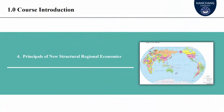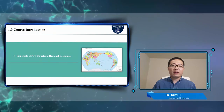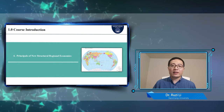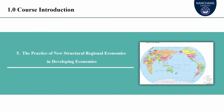Chapter 4 will introduce the principles of New Structural Regional Economics, such as regional externality and endowment structure transformation. These are an important basis for us to analyze regional problems using New Structural Regional Economics.